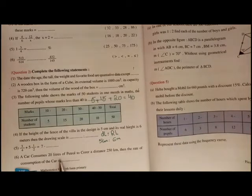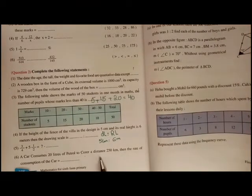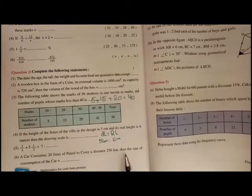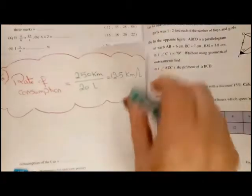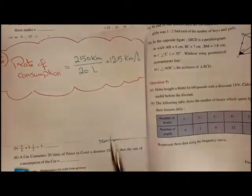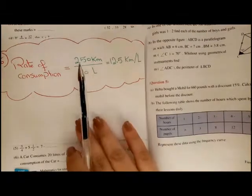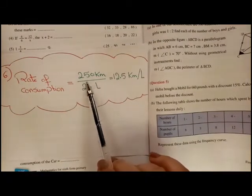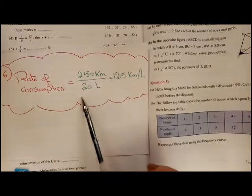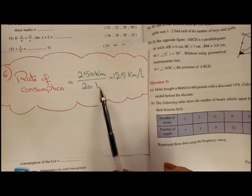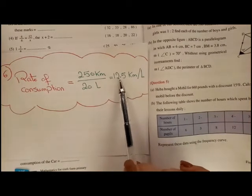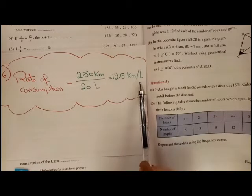Number 6: a car consumes 20 liters of petrol to cover a distance of 250 kilometers. The rate of consumption equals distance over fuel, so 250 kilometers over 20 liters equals 12.5 kilometers per liter.